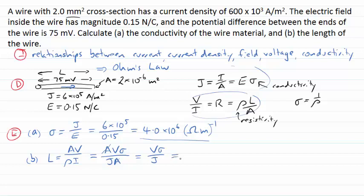So now I have 75 millivolts was the potential difference across my wire. My conductivity I just calculated is 4 by 10 to the power of 6. And I was given that current density of 6 by 10 to the 5. And I do that calculation and I find I get the value of 0.5. And that will be in units of metres, that's the length of my wire.